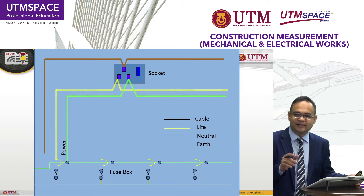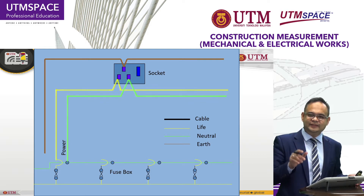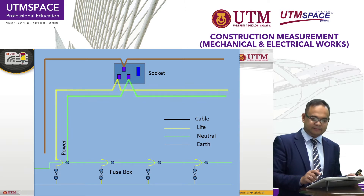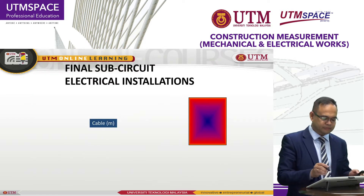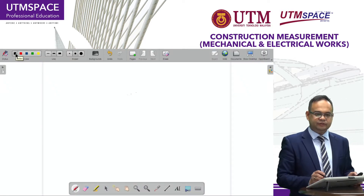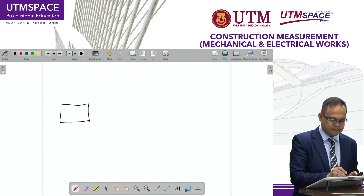But for the supply for lighting installation and also electrical appliance installation, we have a slightly different process because the supply works like this. I'll show you in the drawing. The supply — for example, from the DB — I can show you this is the DB.